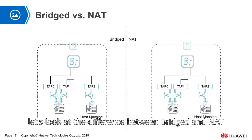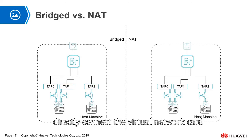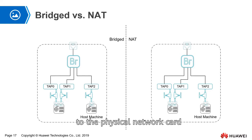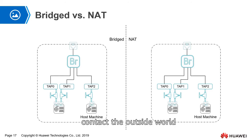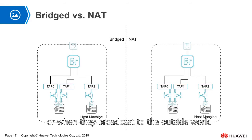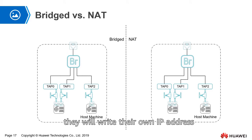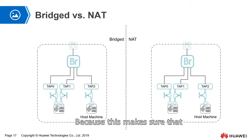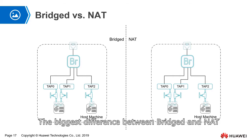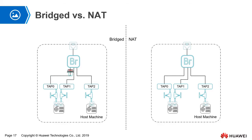First of all, let's take a look at the difference between bridge and NAT. Both bridge and NAT directly connect the virtual network card to the physical network card, but they have some differences when forwarding data. When the virtual machine contacts the outside world, even including physical machines, or when they broadcast to the outside world, they will write their own IP address as a source address.